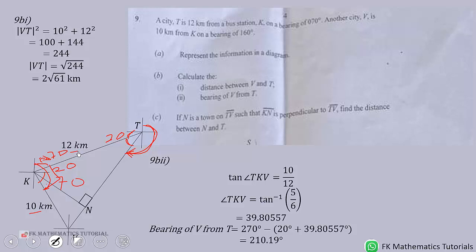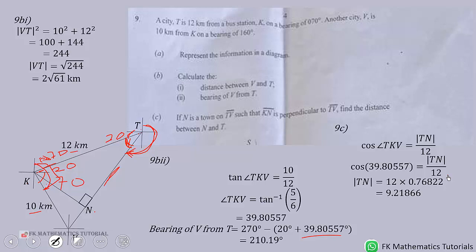So we can use cosine, because this side is adjacent to this angle which we already know to be 39.80. Cosine of that angle will be equal to TN over 12. In this case, KT has become the hypotenuse for triangle KNT. That is why it is over 12, because cosine is adjacent over hypotenuse. So when we do that, we are getting 9.21866, that is 9.22 kilometers to 2 decimal places.